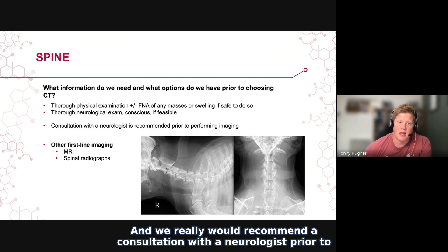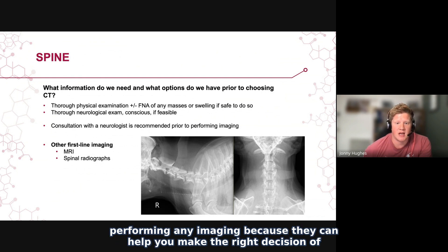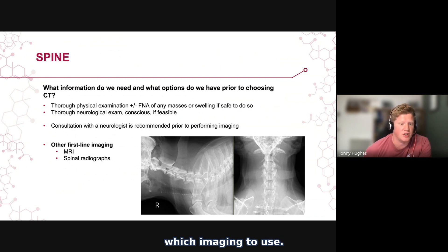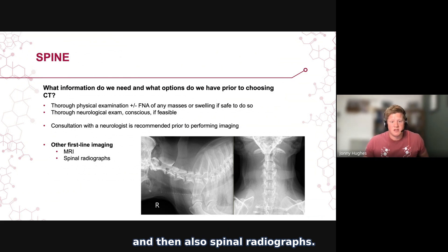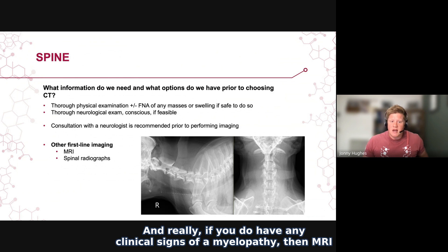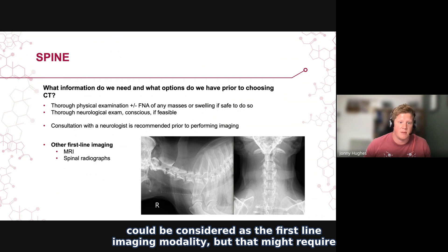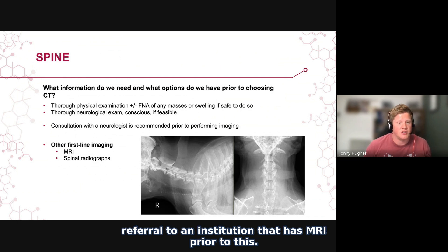We would really recommend a consultation with a neurologist prior to performing any imaging because they can help you make the right decision of which imaging to use. The other first-line imaging options available are MRI and spinal radiographs. If you have any clinical signs of a myelopathy, MRI could be considered as the first-line imaging modality, though that might require referral to an institution that has MRI.